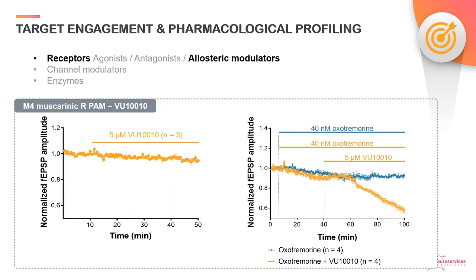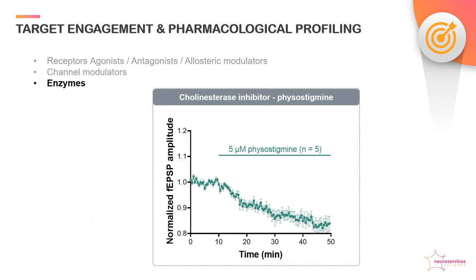It is also possible to document the effect of allosteric modulators when evaluating compounds on synaptic transmission or plasticity. For instance, VU10010, a positive allosteric modulator of M4 muscarinic receptors, is devoid of effect on evoked responses in the CA1 region when applied alone at 5 micromolar over a 40-minute period. However, it strongly enhances the effect of a low concentration of oxotremorine on synaptic transmission. Additionally, compounds modulating enzyme activity can be evaluated: application of the cholinesterase inhibitor physostigmine caused a significant reduction of field PSPs elicited by stimulation of the medial perforant path within the hippocampus.